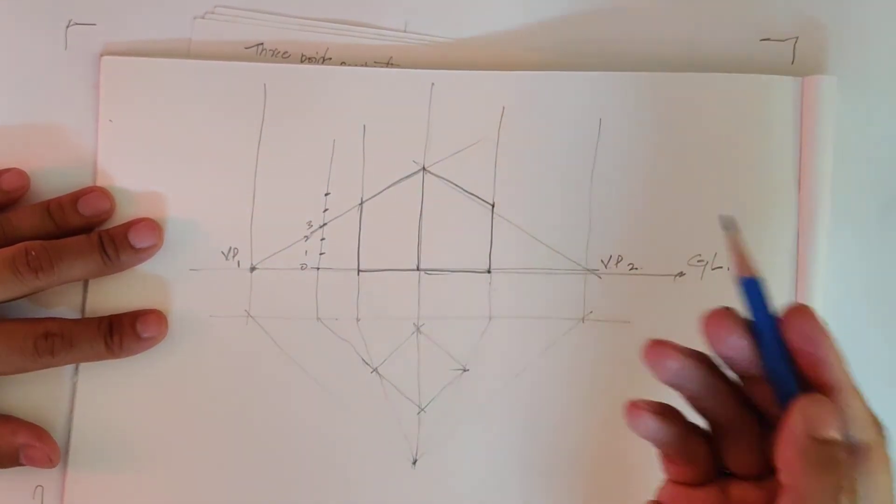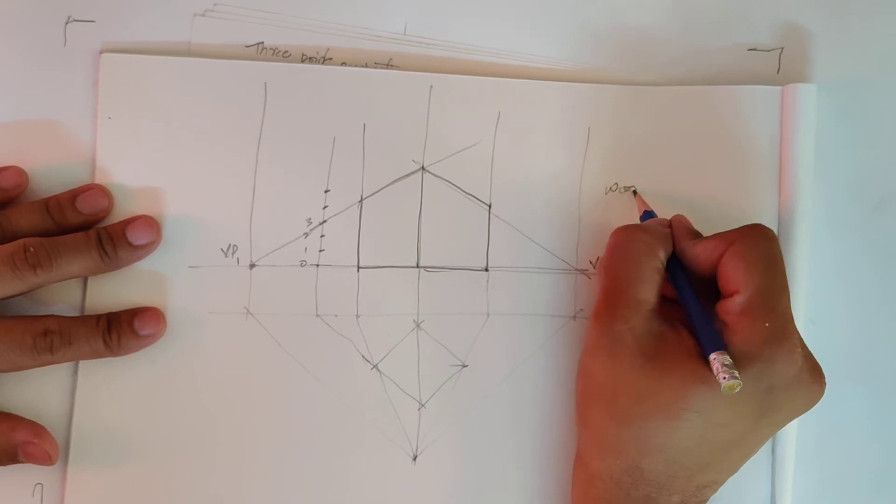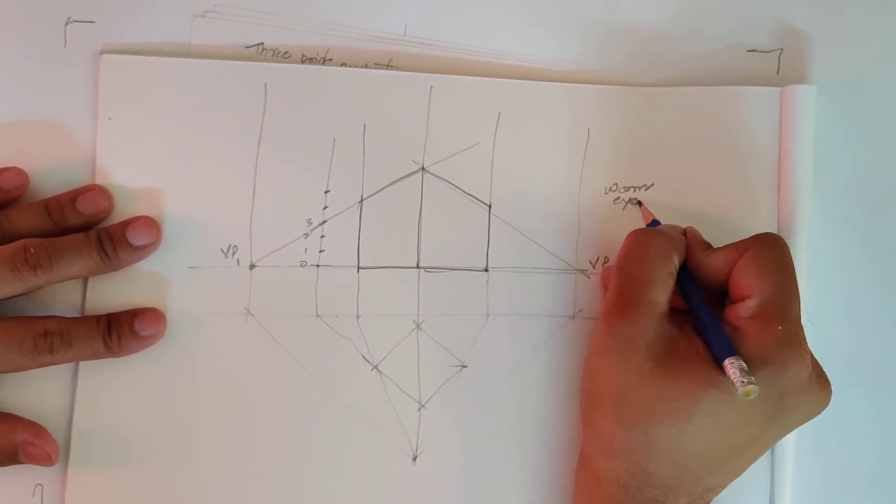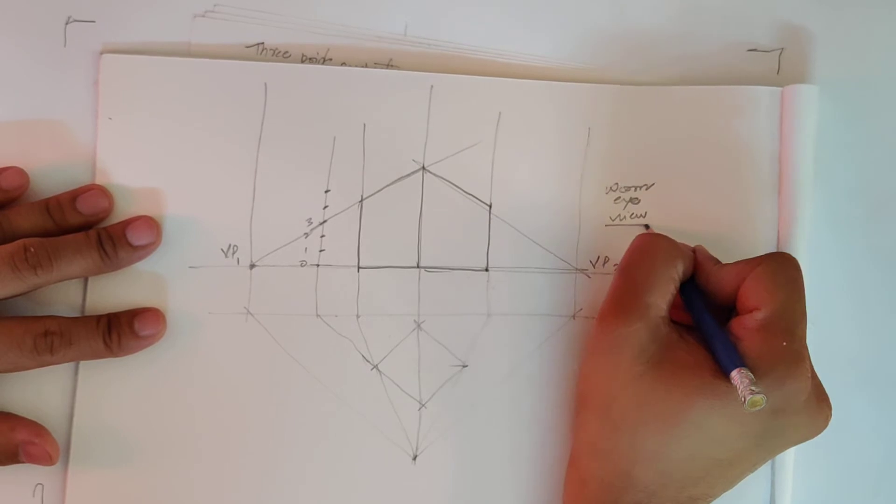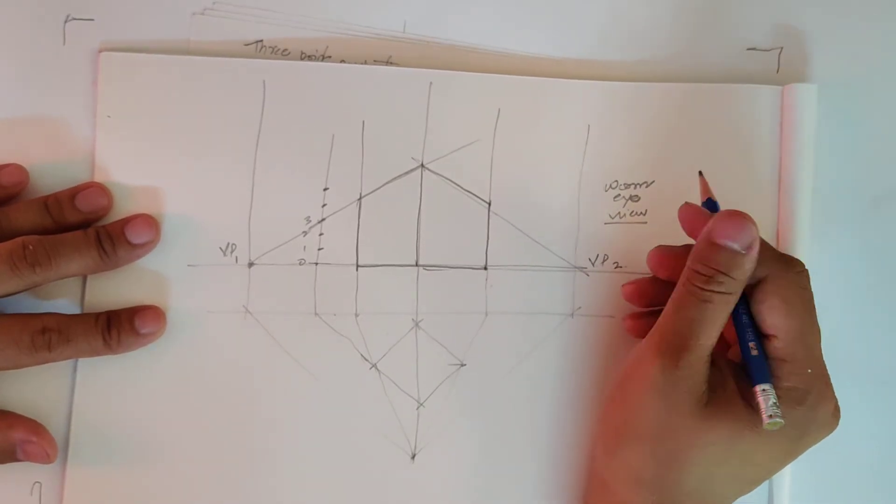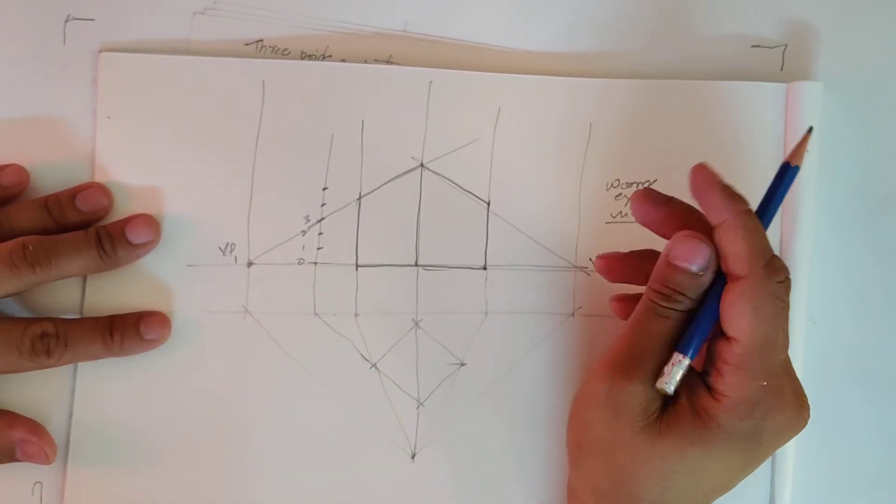And this kind of view is also known as worm's eye view, because a worm views any building from the very, very ground floor or from the floor.